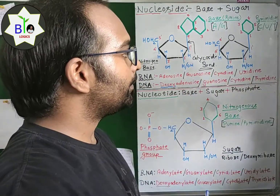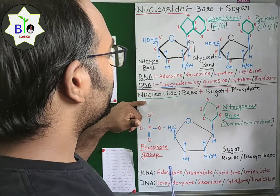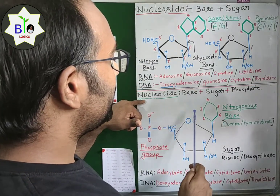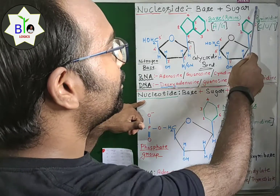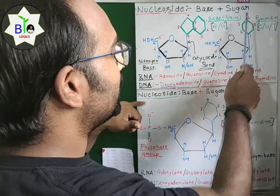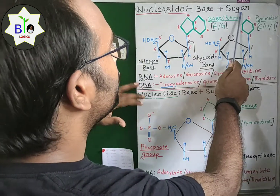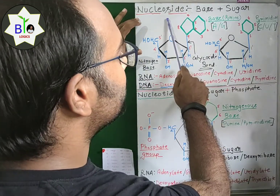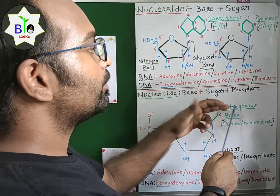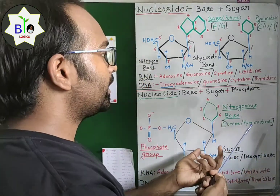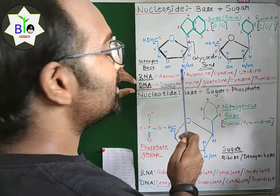Before moving to the structure of nucleotide, which is made up of base, sugar, and phosphate, note that phosphate is not present in a nucleoside. This is the basic difference between nucleoside and nucleotide: in a nucleoside only base and sugar are present, but in a nucleotide a phosphate group is also present.